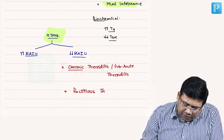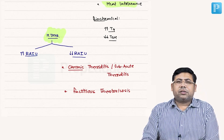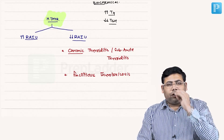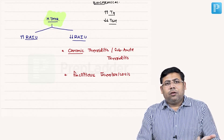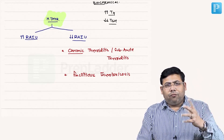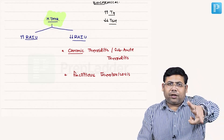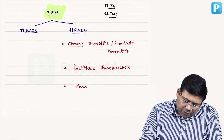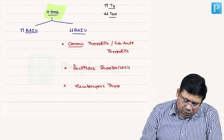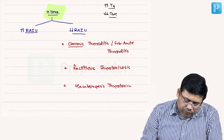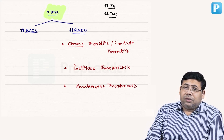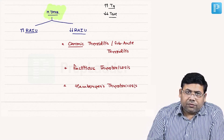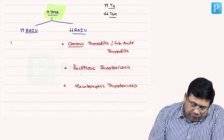Apart from thyroiditis, decreased RAI uptake may also be due to factitious thyrotoxicosis — where someone prescribed 40 international units instead takes 40 tablets, altering the facts, hence 'factitious.' It may also be due to hamburger thyrotoxicosis. On the other side, causes of increased radioactive iodine uptake include Graves' disease.